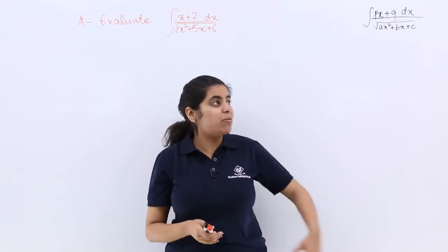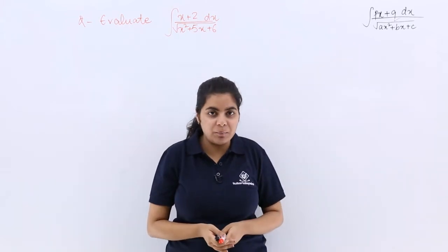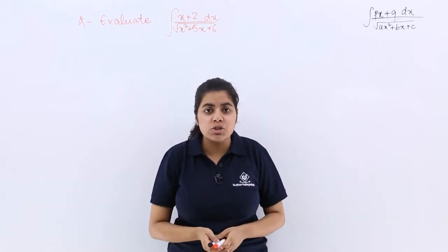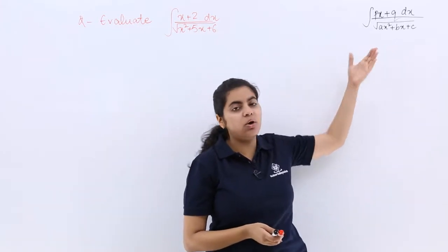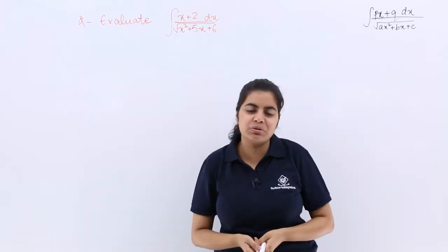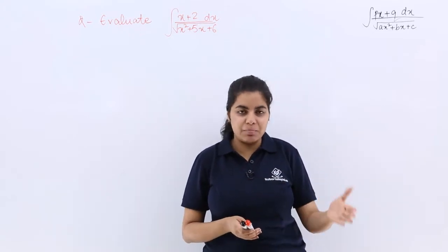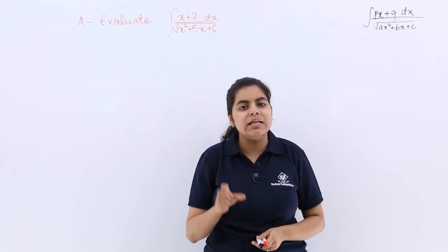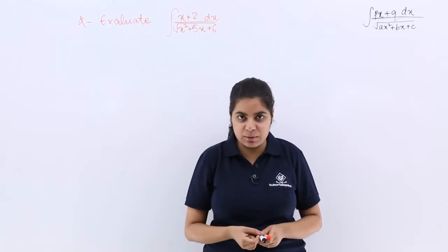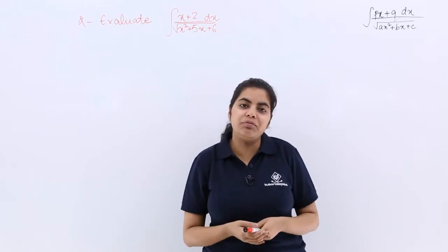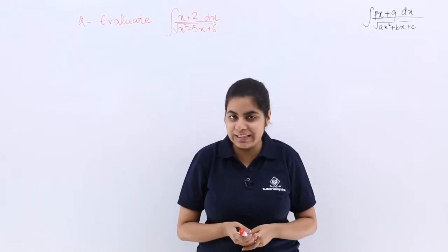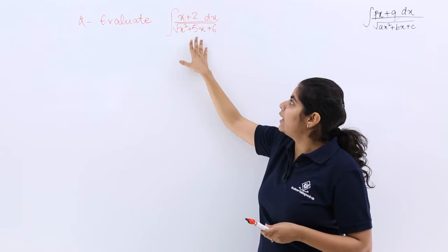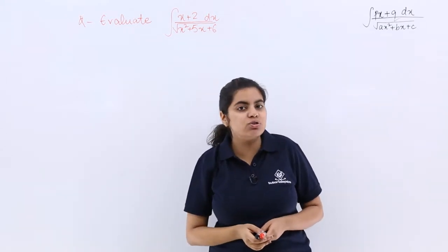In this video, let's see this format of a question: (Px + Q)dx over √(Ax² + Bx + C). How do we evaluate the integral of this format? We have a question in front of us to understand. We will be dealing with lambda and mu, which are very much known to you. So evaluate the integral of (x + 2)dx upon √(x² + 5x + 6). How do we do it?